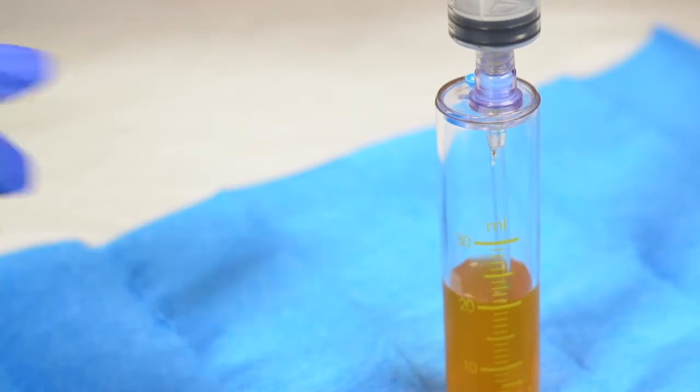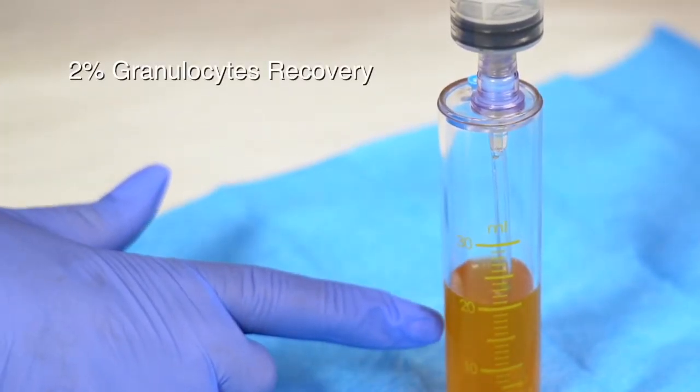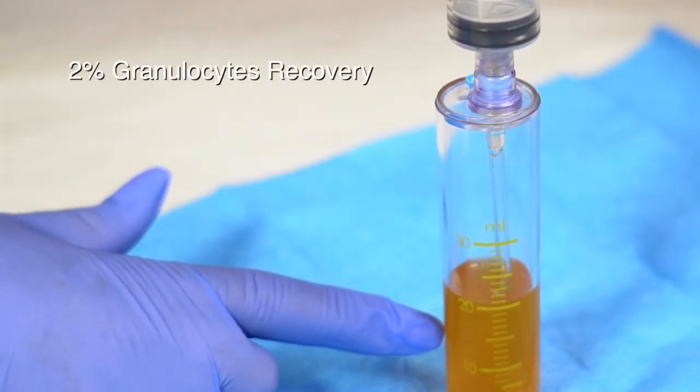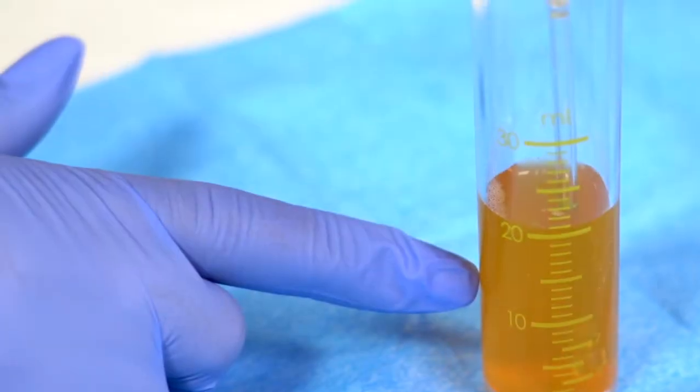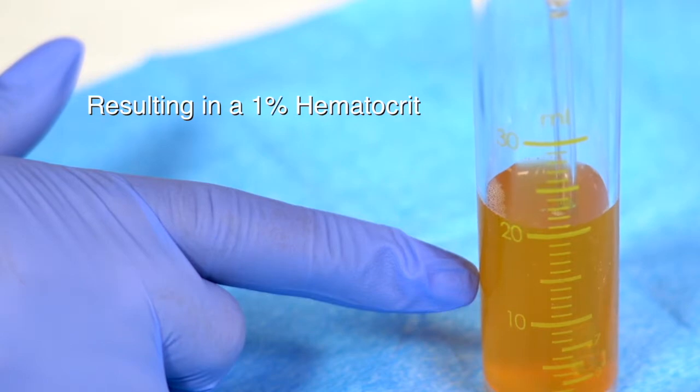PureSpin PRP has a 2% granulocytes recovery, providing for the perfect ratio of white blood cells in concurrence with the lowest concentration of red blood cells, resulting in a 1% hematocrit.